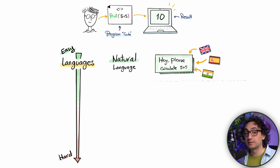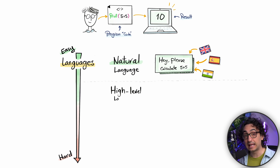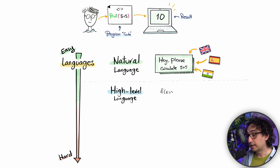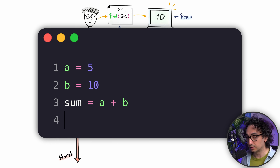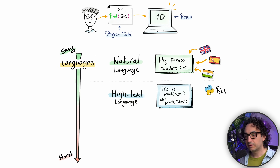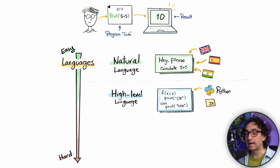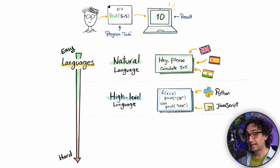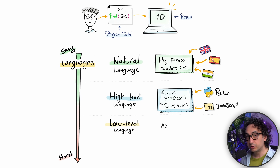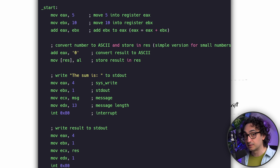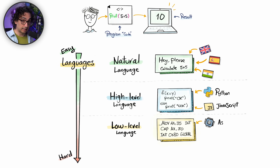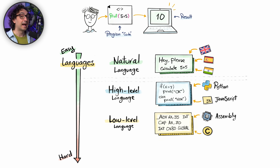Moving on, we have high-level languages. These are programming languages made for humans because they are very simplified, logical, and easy to write and read. Examples include Python and JavaScript. Then going lower, we have low-level languages that can talk directly to machines, but they are really hard for humans to read, write, and understand — examples include Assembly and C.